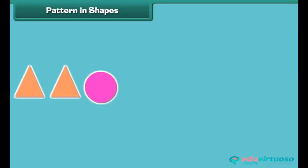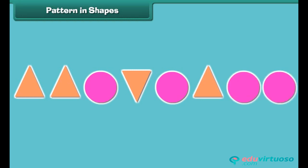Now look at this arrangement of triangles and circles. Can we call it a pattern? No, we can't. Because the shapes do not repeat in a definite order.